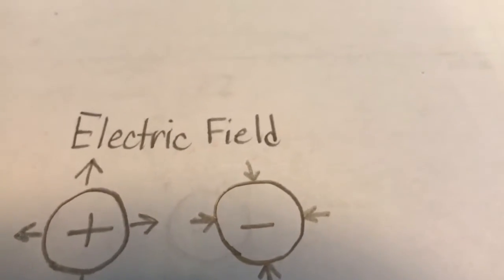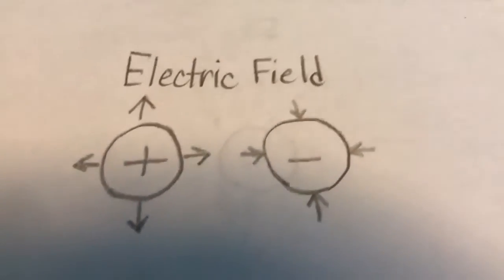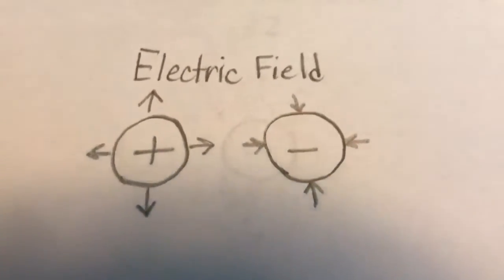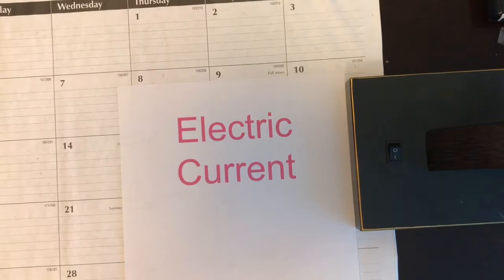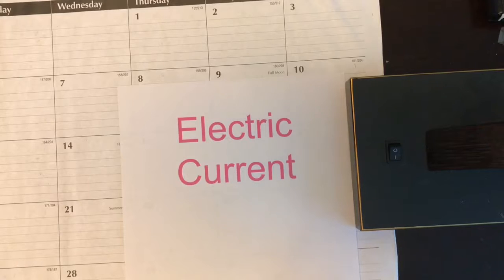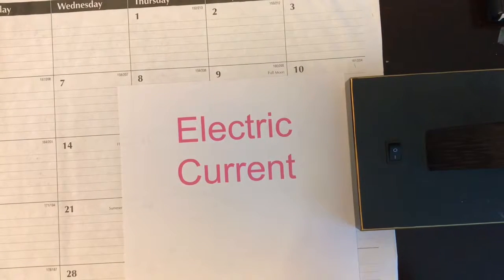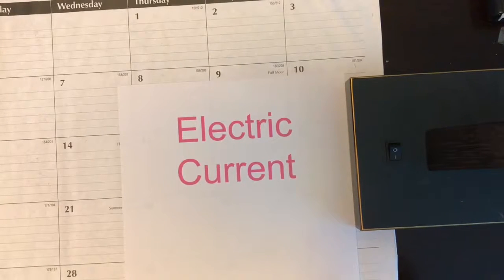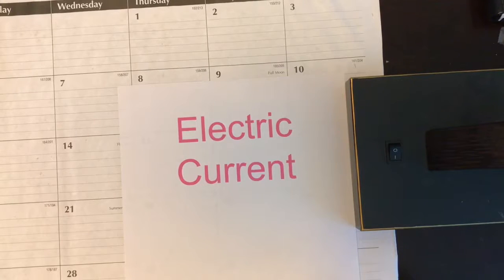So now that we know what charge is, let's figure out how we put it to good use. Electric charge, specifically negative charge within particles called electrons, moves via electric current. To get electrons to flow in a current, all you need is a conductor for the electrons to flow through, such as copper or silver. And you need a net electric field acting on the electrons.